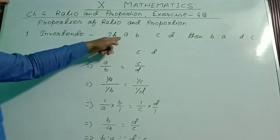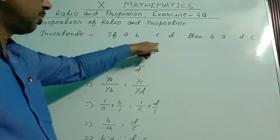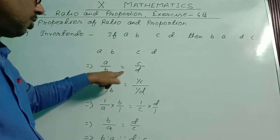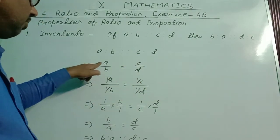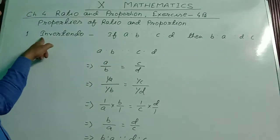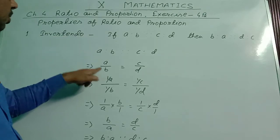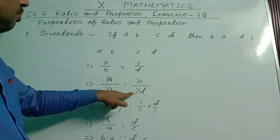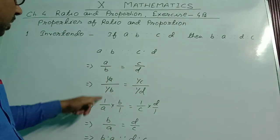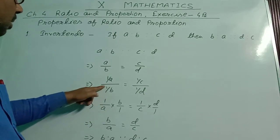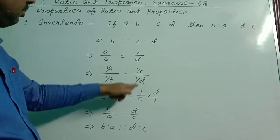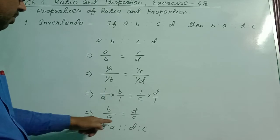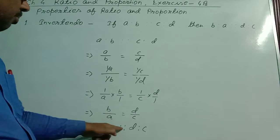The invertendo property states: if a : b ∝ c : d, then b : a ∝ d : c. Let us see how this is true. Given a : b ∝ c : d, we write a/b = c/d. Now we take the inverse of each quantity. The inverse rule: 1/a · b gives b/a, and 1/c · d gives d/c. So it becomes b/a = d/c, which we write as b : a ∝ d : c. This confirms the invertendo property.